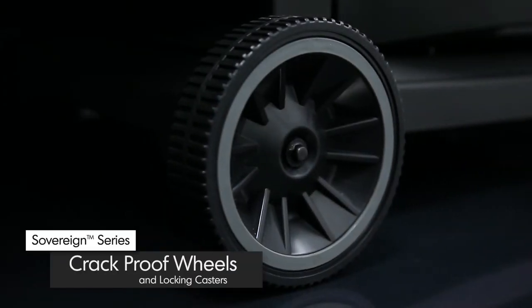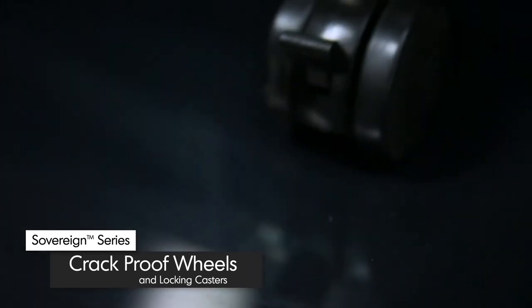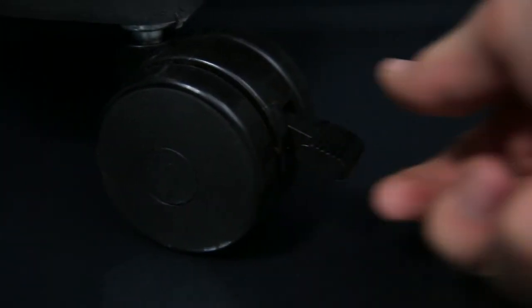All Sovereign models come with two large crack-proof wheels for easy maneuverability and two durable locking casters to keep your Broil King in place.